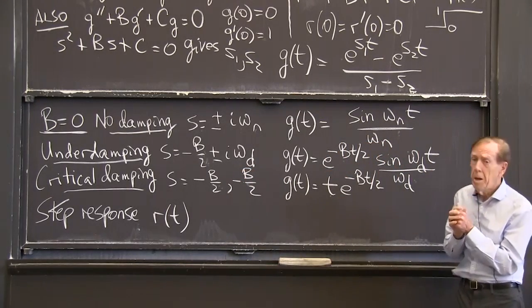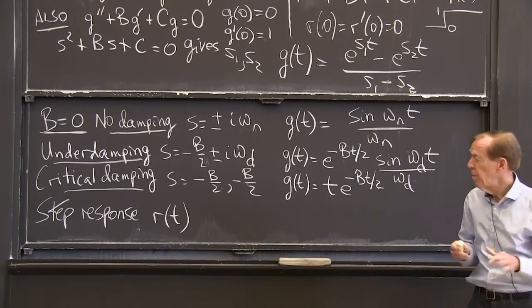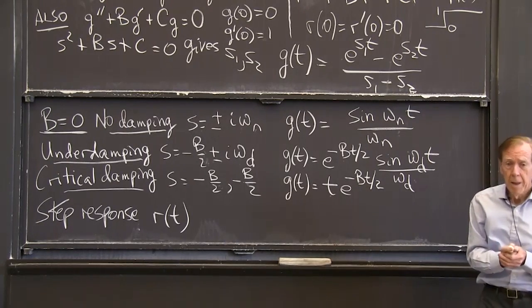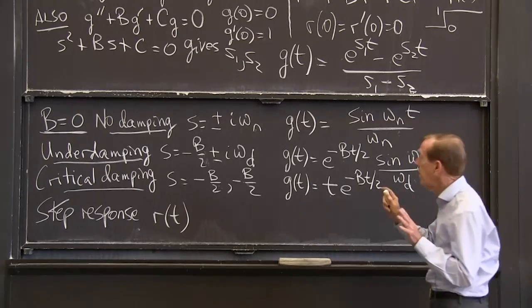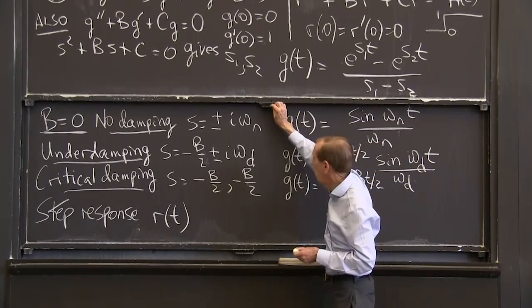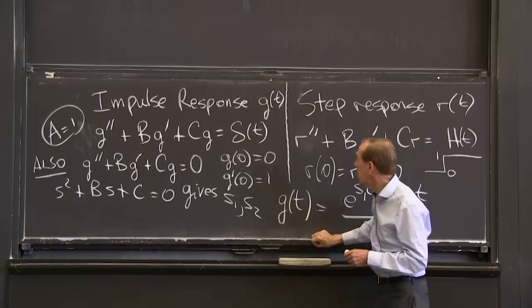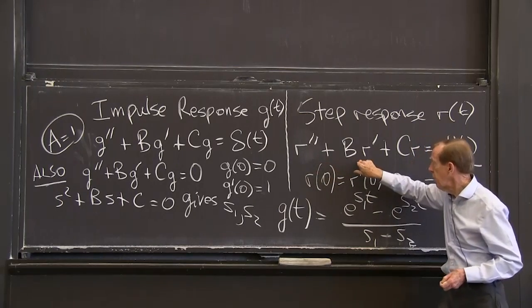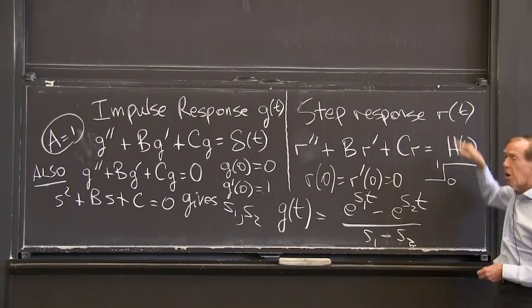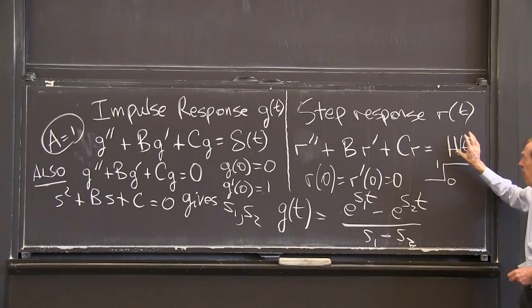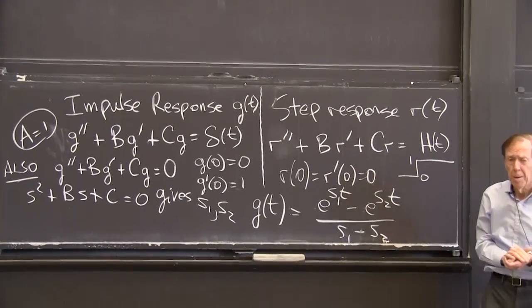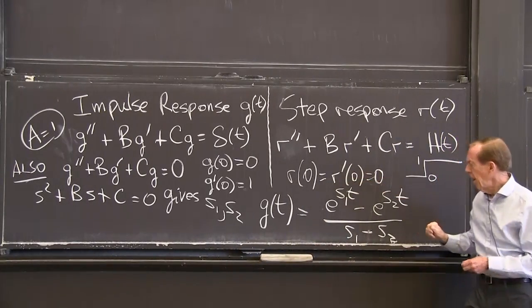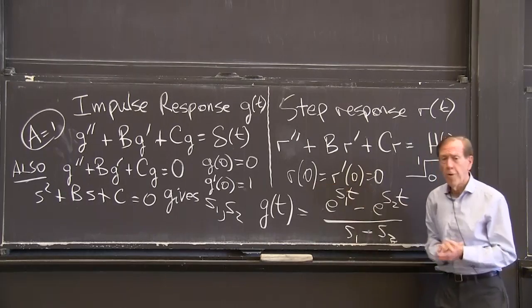So we're good for the impulse response. Now I just have to say: what's the step response? I'll end this video by going back to my equation. Now I'm going to deal with a step response. The equation is the same; I'm calling the solution r for response. The right-hand side is now a step instead of a delta. We'd like to solve that equation starting from rest — a switch went on — and I want a formula for r(t).